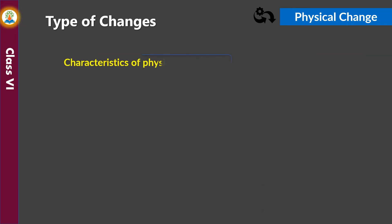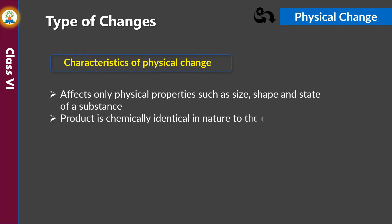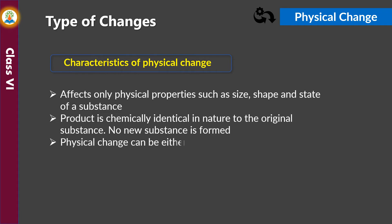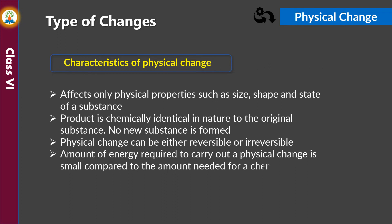Characteristics of physical change: A physical change affects only physical properties such as size, shape, and state of a substance. The product is chemically identical in nature to the original substance. No new substance is formed. A physical change can be either reversible or irreversible. The amount of energy required to carry out a physical change is small compared to the amount needed for a chemical change.